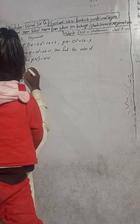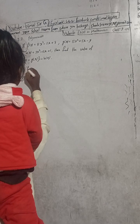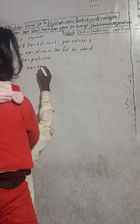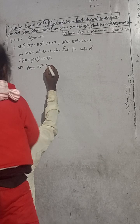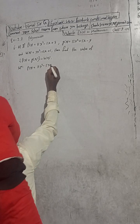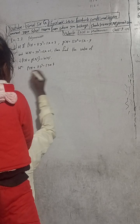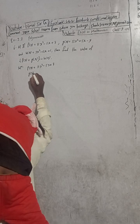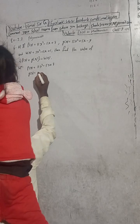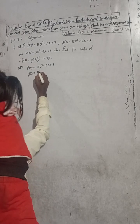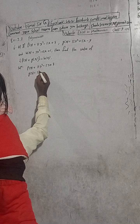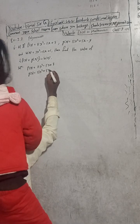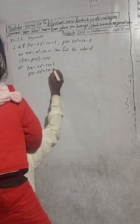Here you have f(x) is equal to 11x² minus 5x plus 7, and g of x is equal to 13x² plus 5x minus 9.